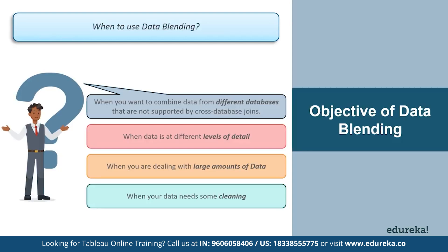The next use case is when you have data at different levels of detail. Sometimes one data set captures data using greater or lesser granularity than the other. For example, suppose you are analyzing transactional data and quota data. Your transactional data might capture all transactions; however, quota data might aggregate transactions at a quarter level. Because the transactional values are captured at a different level of detail in each data set, you should use data blending to combine data.